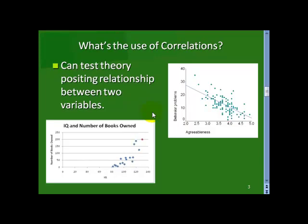So, what's the use of correlations? The key value is, if you have an idea that two variables should be related, you can check and see if the data suggests that. Here we have IQ and number of books owned. You put IQ on the X axis and number of books owned on the Y axis. And as IQ goes up, we should see a pattern where number of books goes up. And it looks like that. This is a positive relationship.